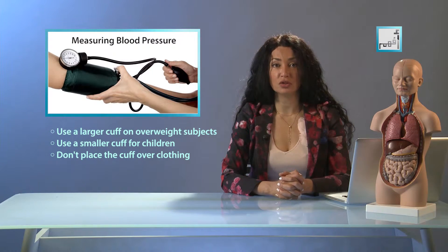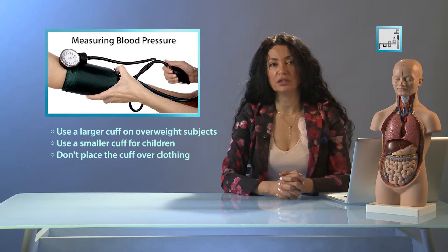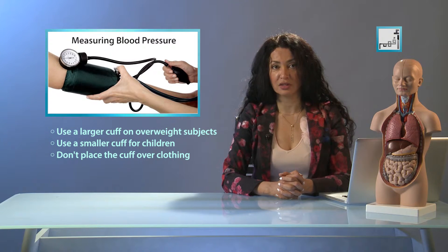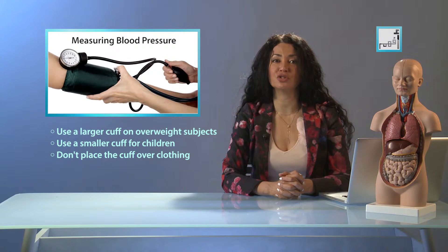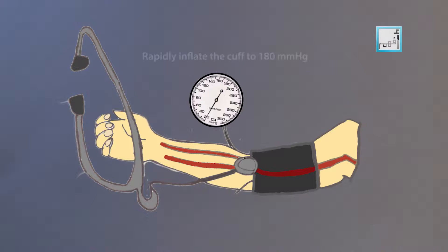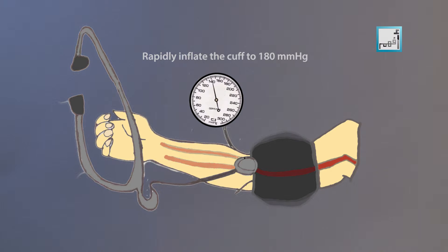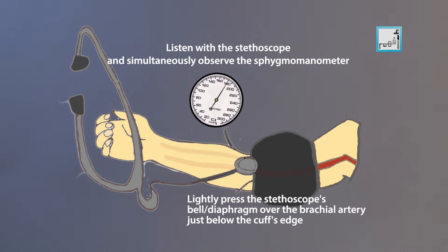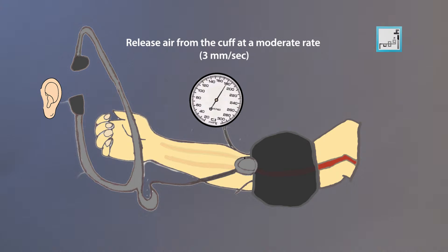It is essential that the correct size of cuff is selected for the patient. For clinical measurements, it is usual to measure and record both arms in the initial consultation to determine if the pressure is significantly higher in one arm than the other. The cuff is inflated until the artery is completely occluded or blocked. Using a stethoscope, we listen to the brachial artery at the elbow. The examiner slowly releases the pressure in the cuff.